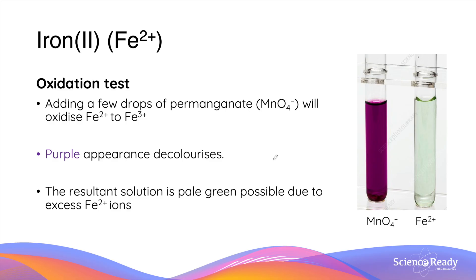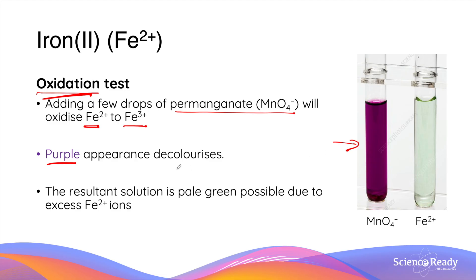Iron(II) ions can be distinguished from iron(III) ions using an oxidation test — by adding a strong oxidizing agent such as permanganate. This will oxidize the iron(II) ions to produce iron(III) as the iron(II) ions lose electrons. Remember that oxidation is the loss of electrons. Permanganate ions have a characteristic purple color. If added to iron(II) ions, the permanganate is reduced to form a colorless manganese ion, so the purple color will decolorize. However, permanganate will remain purple if added to iron(III) ions.